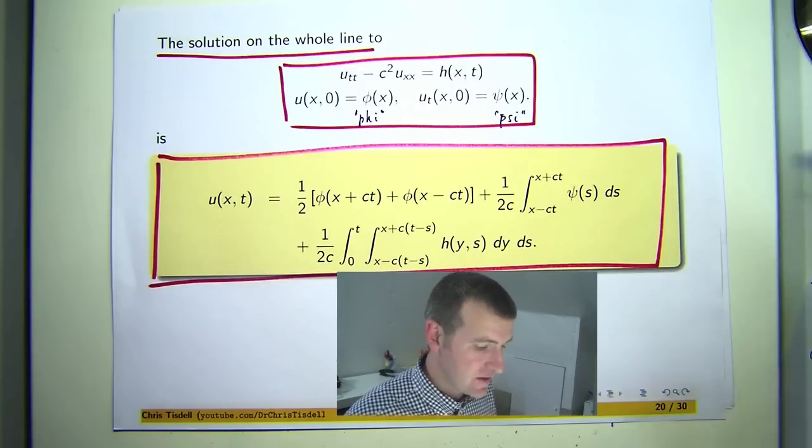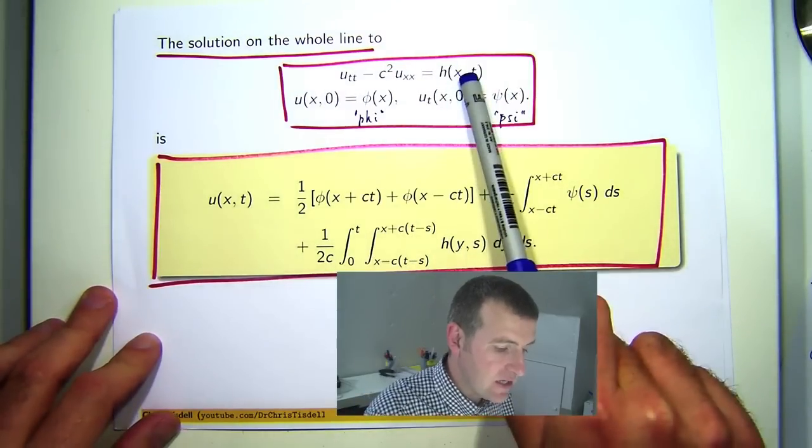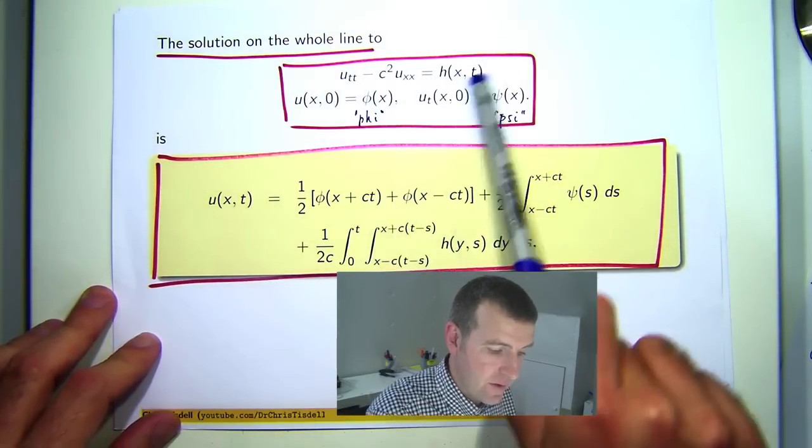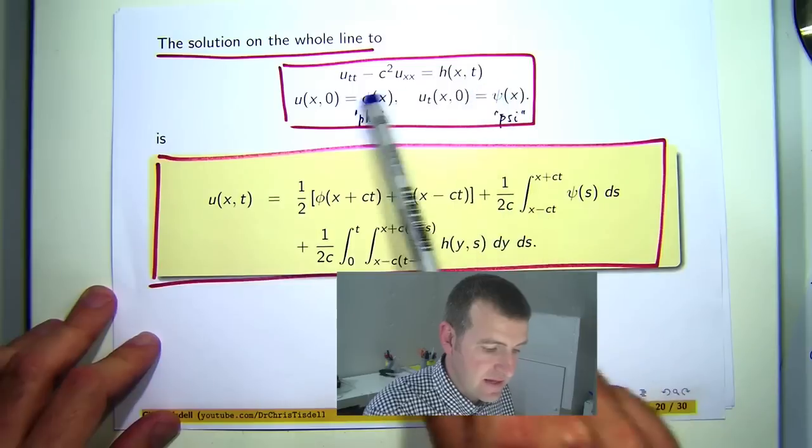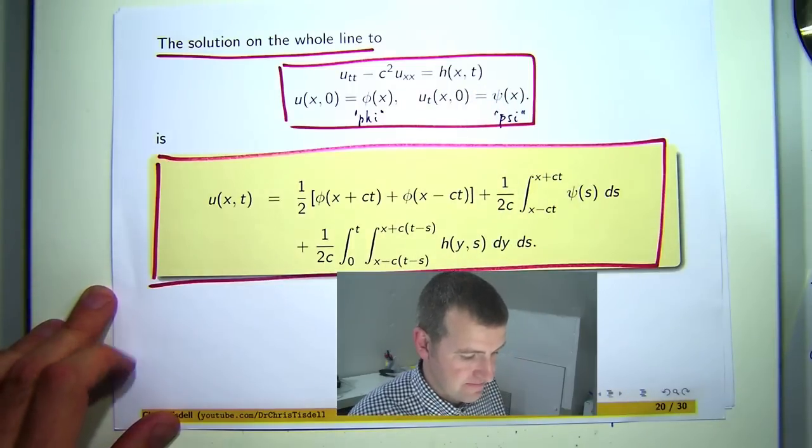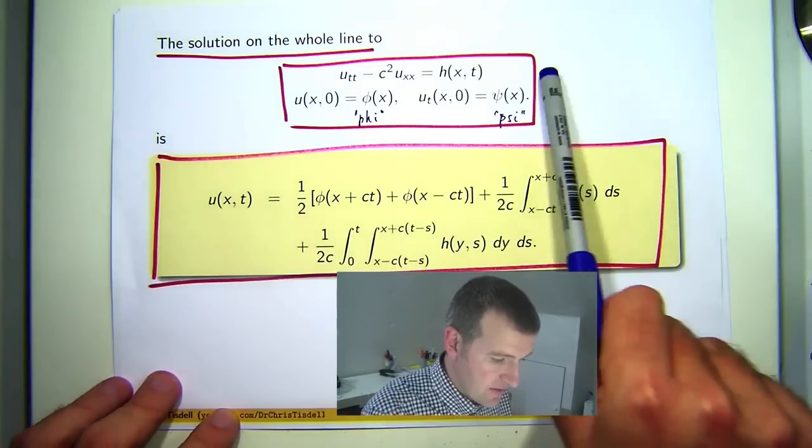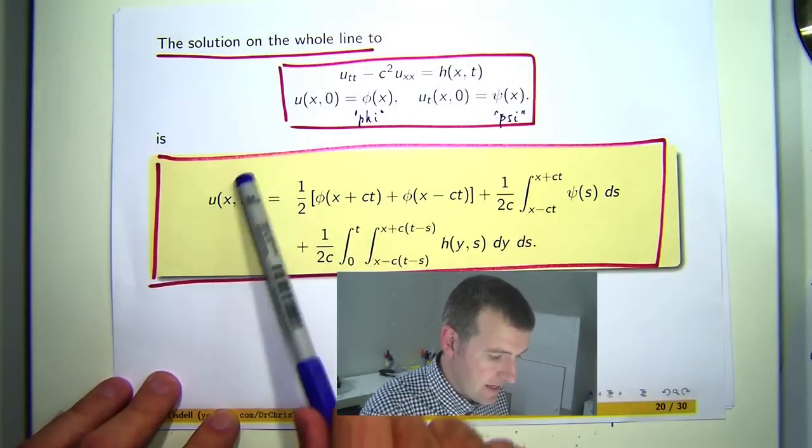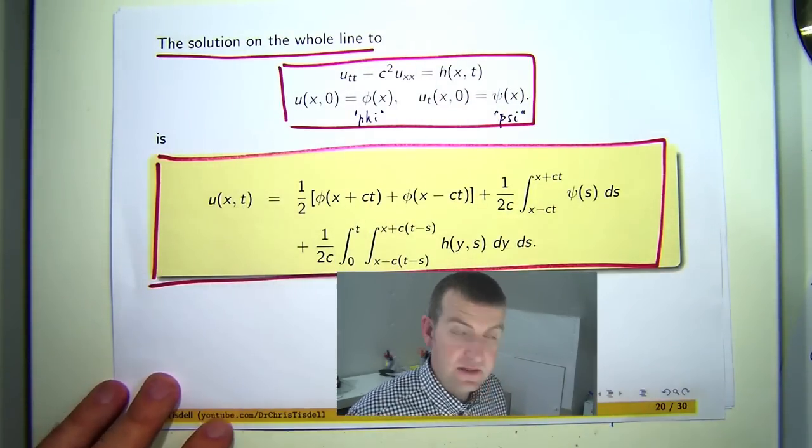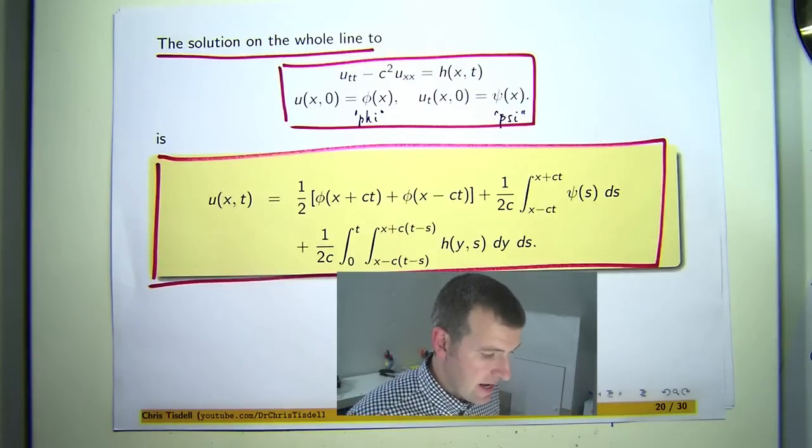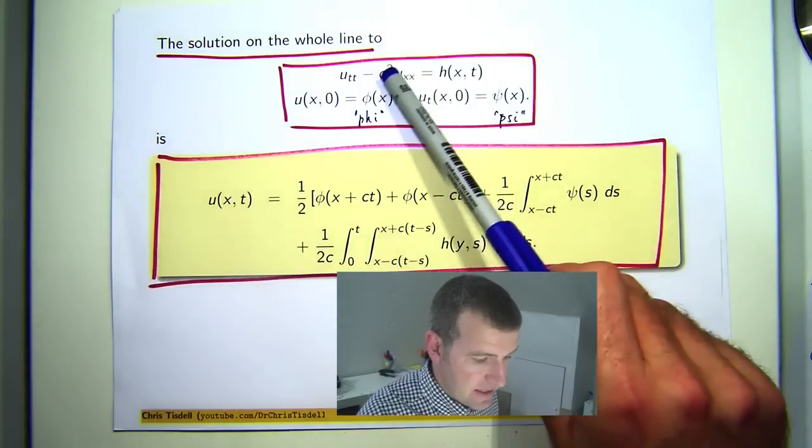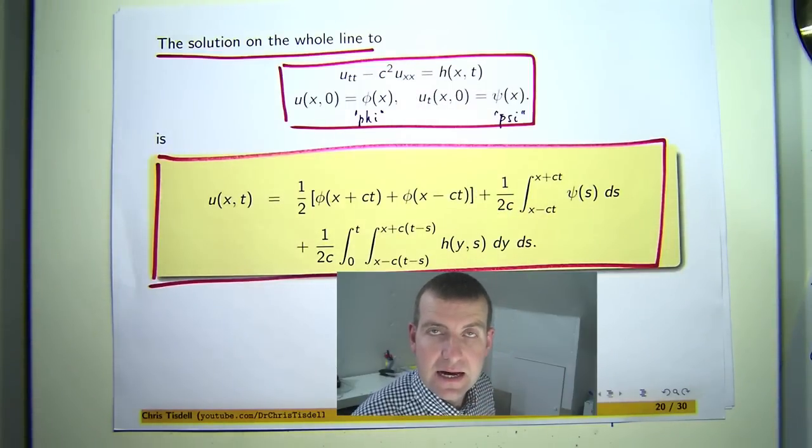In previous videos we've been looking at the inhomogeneous wave equation together with some initial data. And in the two previous videos I showed that the solution to this problem here is this. Now just to recap, c here is a constant.